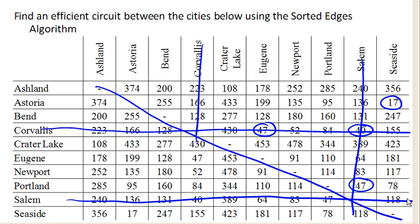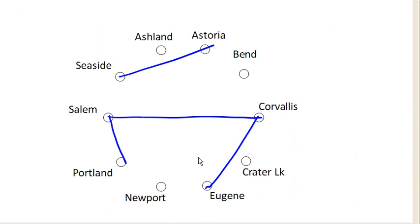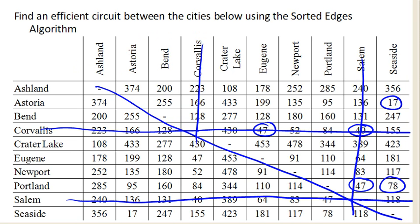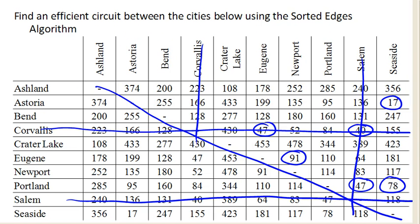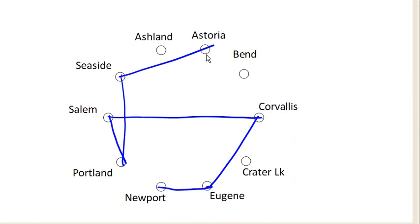Moving along, our next cheapest option is Portland to Seaside at 78, so we'll connect those. Then next is Eugene to Newport, so we add Eugene to Newport. Next on the list is Portland to Astoria at 95, but we do not want to connect that, because it would create a mini circuit and give Portland degree 3. So we skip Portland to Astoria.